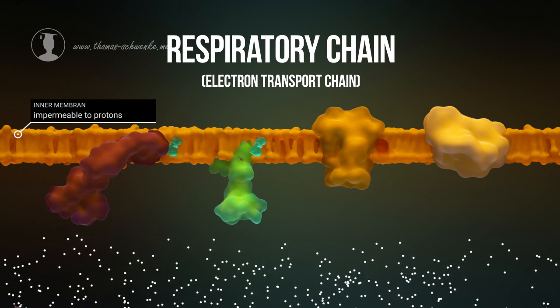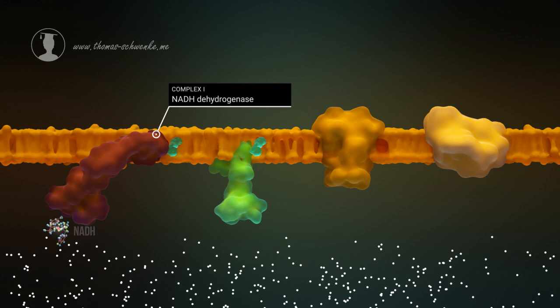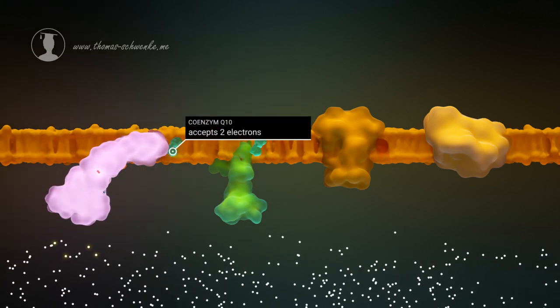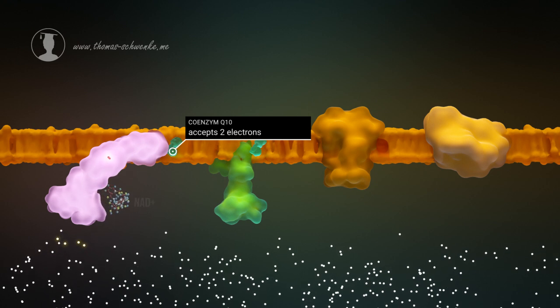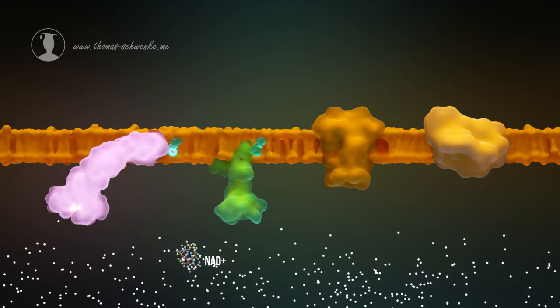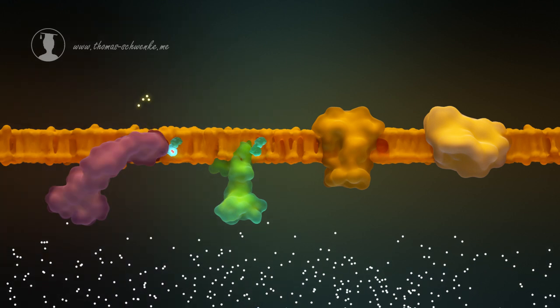Complex 1 first oxidizes the NADH molecule. This means that two electrons are transferred to the complex. The respiratory complex then transfers or donates two electrons to coenzyme Q10. In addition, four protons are pumped to the other side with the help of the electrons.